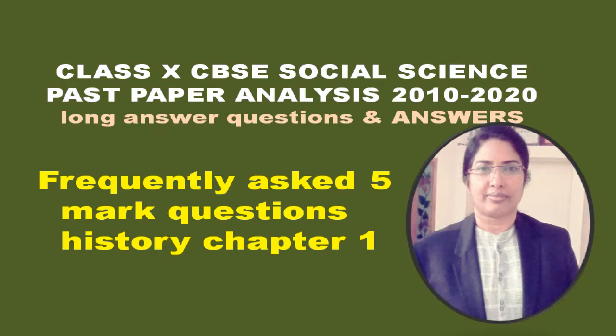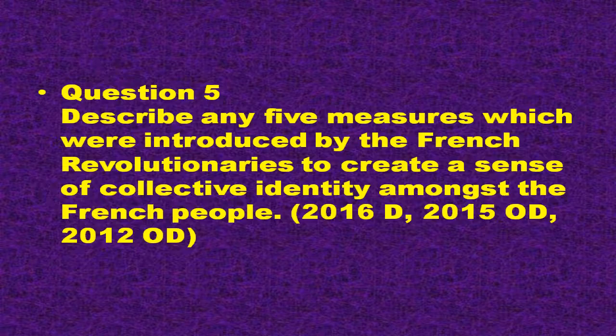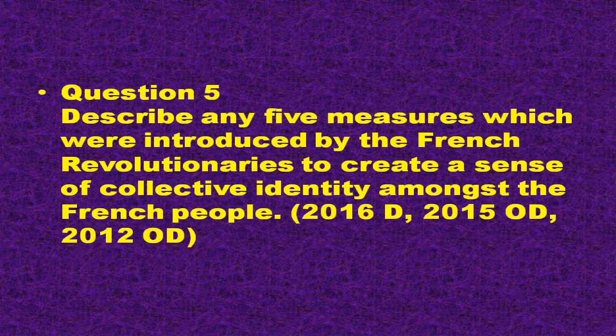Small producers in towns were often faced with stiff competition from imports of cheap machine-made goods from England, where industrialization was more advanced, especially in textile production. In those regions of Europe where the aristocracy still enjoyed power, peasants struggled under the burden of feudal dues and obligations. The rise of food prices and bad harvests added to the hardships of the peasants.